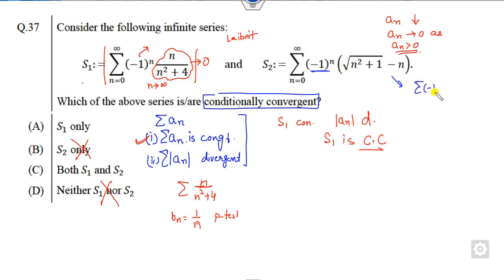So I can write this series as root(n²+n) minus root(n²+1). Clearly this is a decreasing sequence. This goes to 0 as n approaches infinity and this is always positive. So it means this series is convergent by using the Leibniz test.